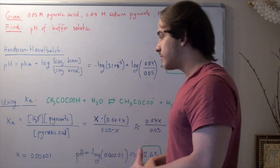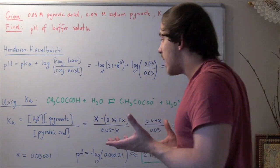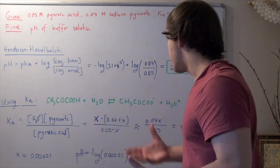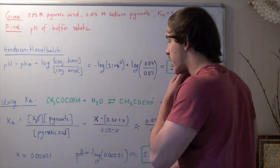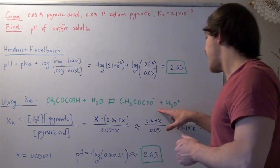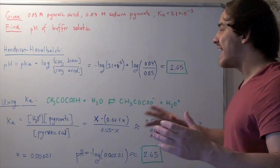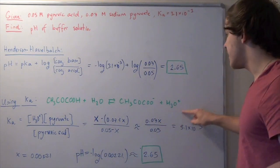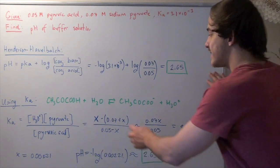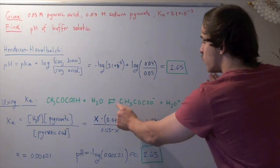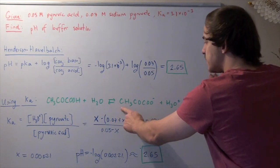Initially, we begin with some amount of pyruvic acid and some amount of pyruvate. We don't have any hydronium, or we approximate it to be zero. At equilibrium, the hydronium concentration is x. Since the ratio is 1 to 1, the increase in pyruvate must be x too.